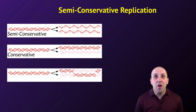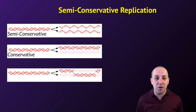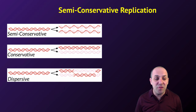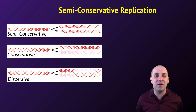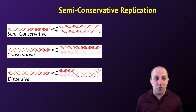In a conservative model, the existing DNA molecule serves as a template for the production of an entirely new DNA molecule. So at the end of replication, you have one DNA molecule that's made out of the two original strands, and the other that's made out of two brand new strands. And then in the dispersive model, each of the original strands serves to replicate portions of each of the two new molecules, so at the end the strands of both new molecules are combinations of old DNA and new DNA.